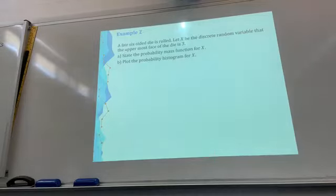Example two. A fair six-sided die is rolled. Let X be the discrete random variable that the uppermost face of the die is 6. State the probability mass function for X. We just want one number, 6. So the probability of success in this case is 1 over 6. The probability of not success is 5 over 6. So it's either 1 over 6 for X equals 1 because X is successful, we know that the uppermost face of the die is 6. And then the rest is 5 over 6 for X equals 0, not successful.